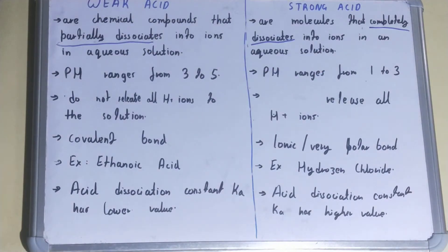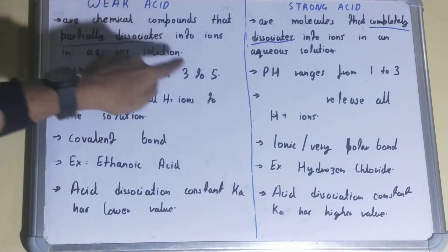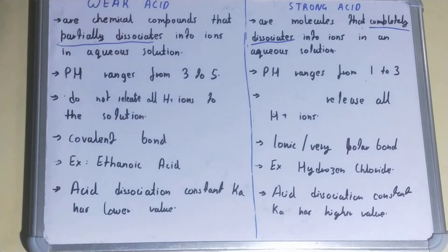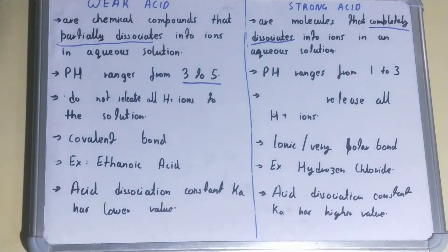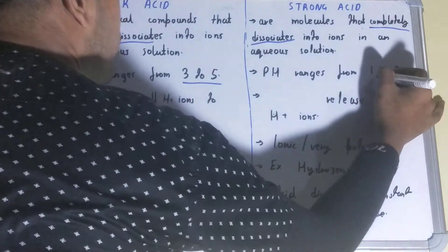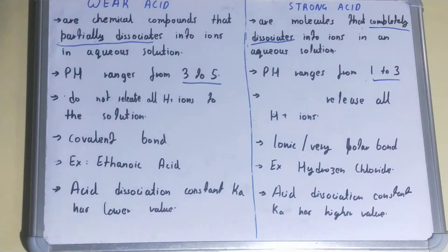Next, if we talk about pH value — which is the most important factor for judging how strong an acid is — for weak acids the pH value varies from 3 to 5, whereas for strong acids the pH value varies from 1 to 3.